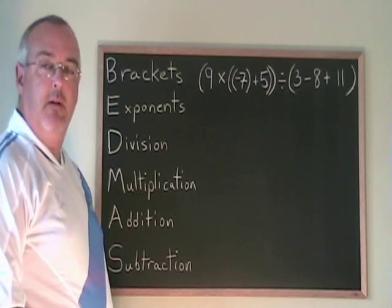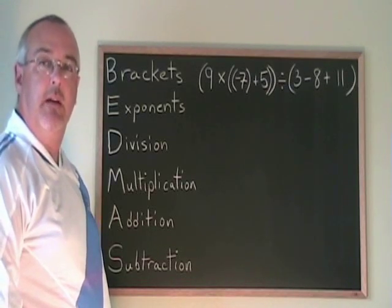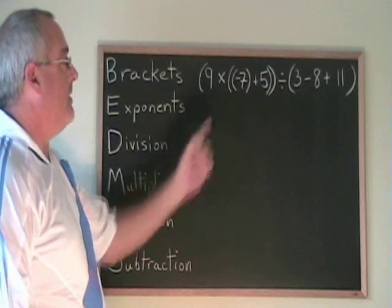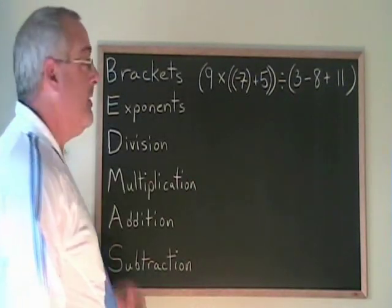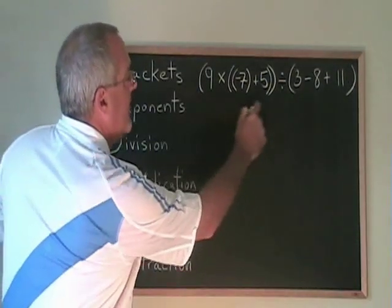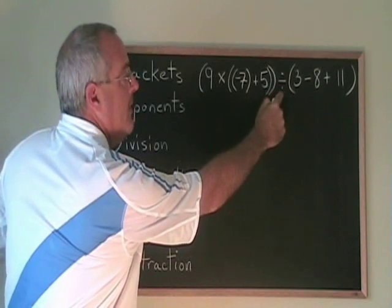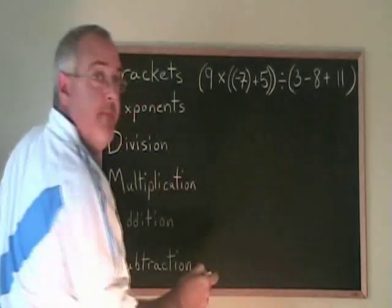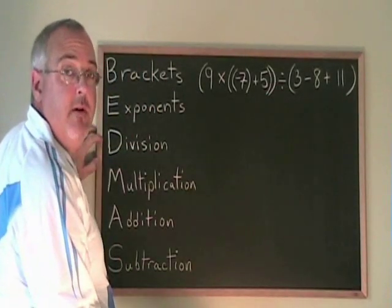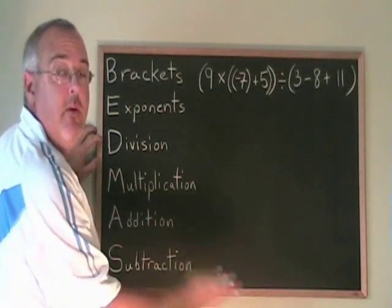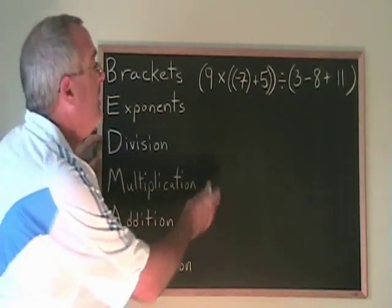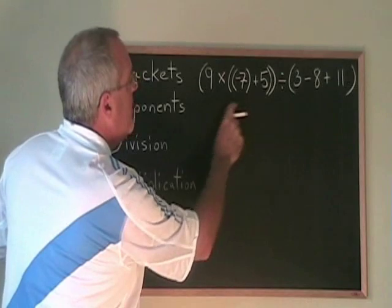Let's do another example of BEDMAS involving integers. This example has a lot of brackets involved. We have a big bracket here, and then a divided by, and then a big bracket. Those brackets have to be done first, and the tiebreaker between them is the one on the left first. So we're focusing our attention on this big bracket.